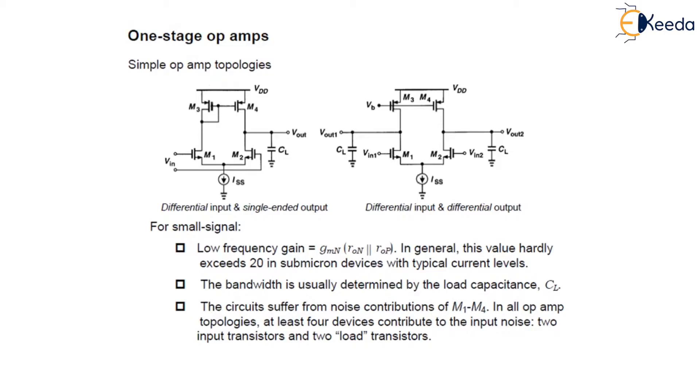The small signal low frequency gain of both circuits is equal to Gm and R0N in parallel with R0P, where the N and P subscript denotes NMOS and PMOS respectively. In this, the bandwidth is usually determined by the load capacitance. The circuit of this figure exhibits a mirror code while the circuit of this figure B does not.